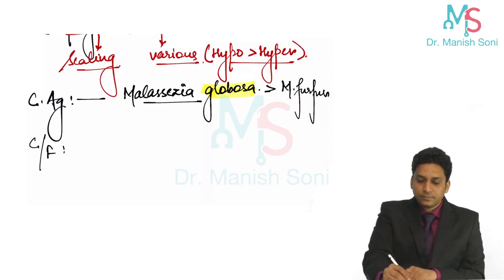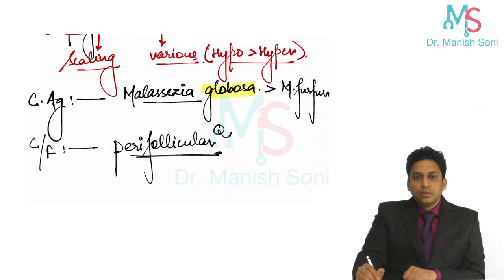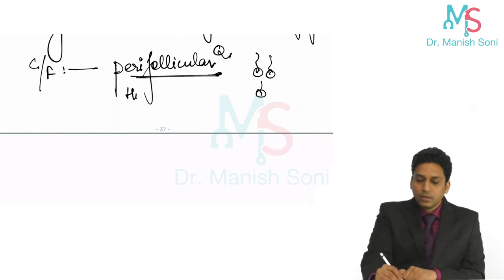Clinical features. Perifollicular. If these are the hair follicles, around these hair follicles you will find these lesions. They are around hair follicles. Perifollicular hypopigmented macules.